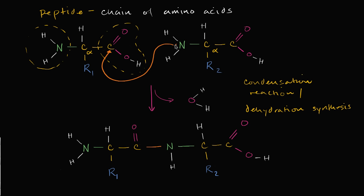Nitrogen has this lone pair and it's electronegative. This carbon right over here is attached to two oxygens, which are more electronegative — the oxygens might hog those electrons. So this nitrogen might want to do what we call in organic chemistry a nucleophilic attack on this carbon. When it does that, in a more formal reaction mechanism, one of the double bond's electrons could go back to this oxygen, and that oxygen would have a negative charge.